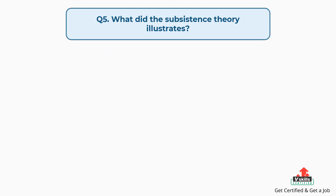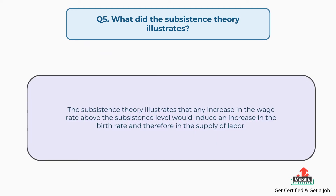Question number five: What did the subsistence theory illustrate? The answer is, the subsistence theory illustrates that any increase in the wage rate above the subsistence level would induce an increase in the birth rate and therefore in the supply of labor.